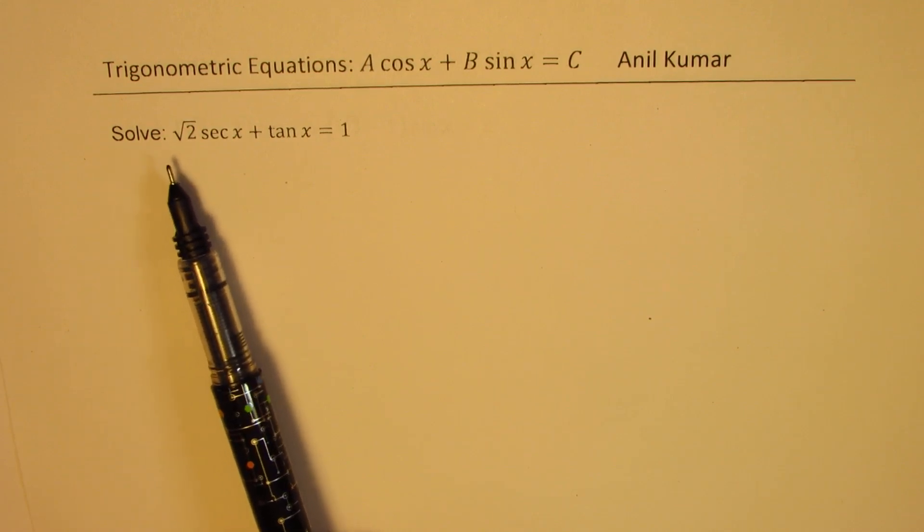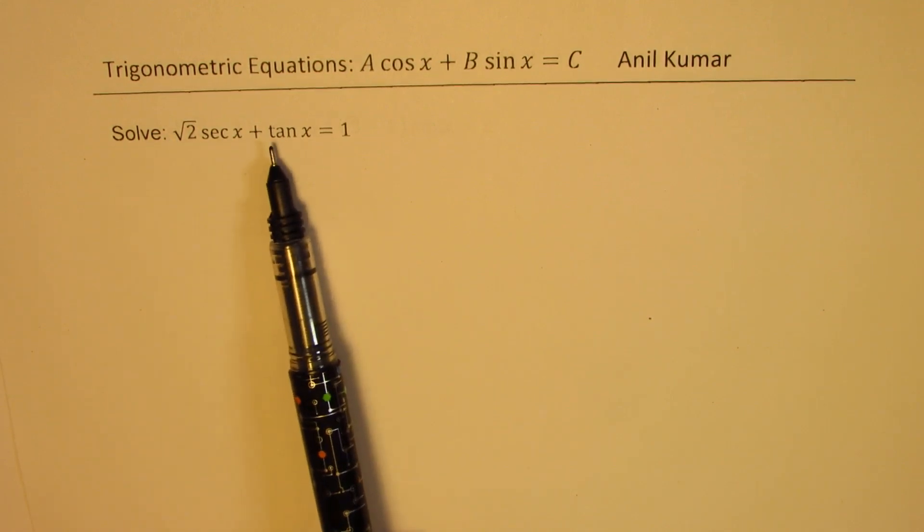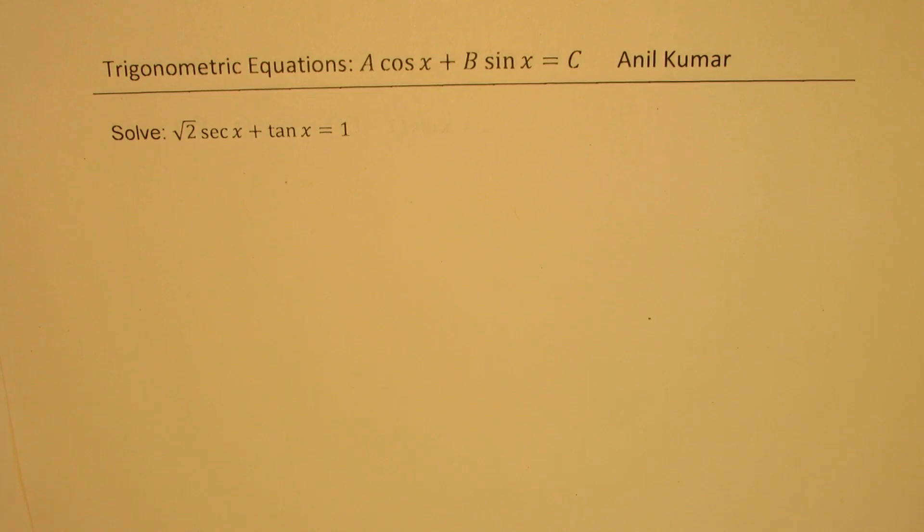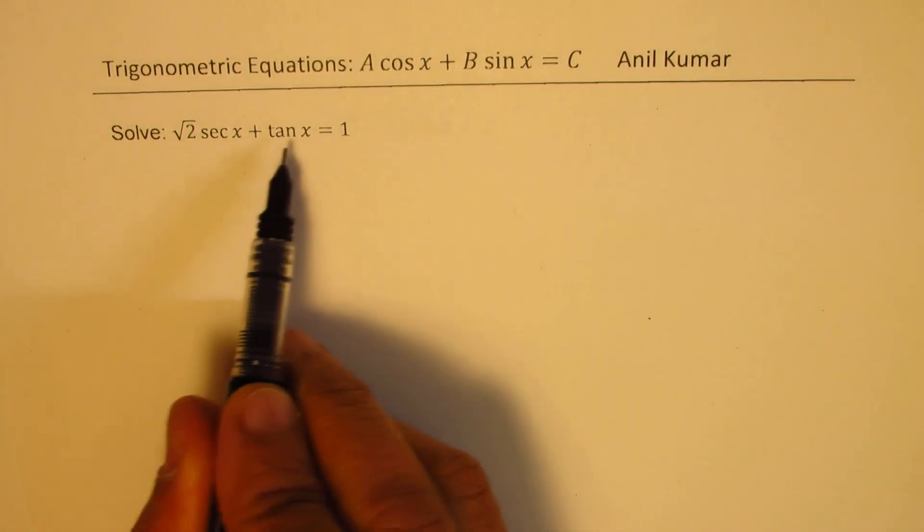The equation here is to solve square root of 2 secant x plus tan x equals to 1. We need to write this in terms of sine and cosine and simplify. That will be our first step.